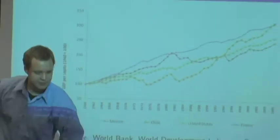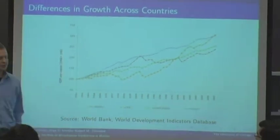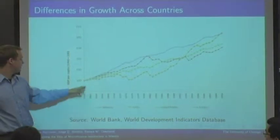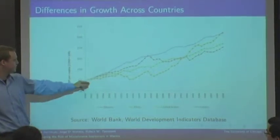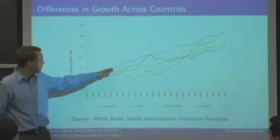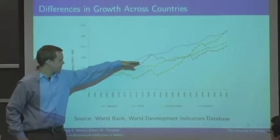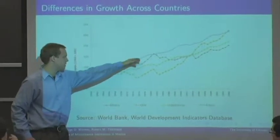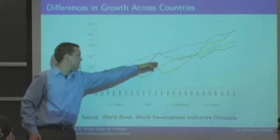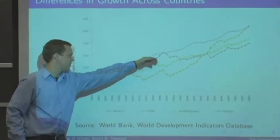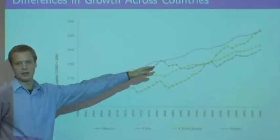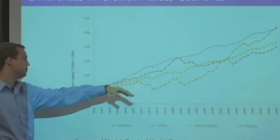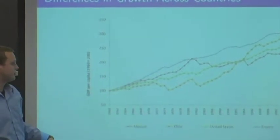This figure is essentially the same data, just represented differently. Here we have Mexico, and you can see that during the 60s and 70s it performed relatively well economically. But after this period, it's sort of fallen behind, and at the end it's last out of those countries.